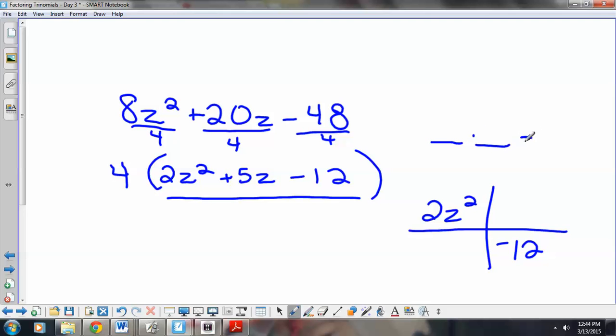Looking for two numbers that multiply to negative 24. And, I got negative 24 by multiplying 2 times negative 12. And, I want those same two numbers to add to 5. Multiply to negative 24 and add to 5. And, I believe that is 8 and negative 3. 8z, negative 3z.